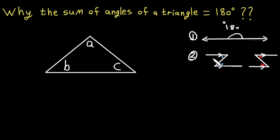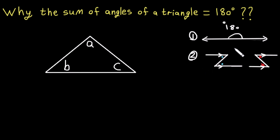You can see this Z and the reflected Z shape — these two pairs of angles are equal. Now we will use this to prove that the sum of angles of a triangle is 180 degrees.